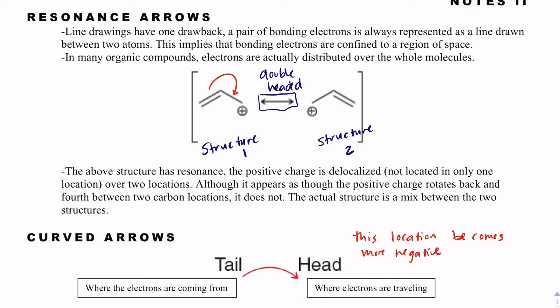Whereas the tail — electrons are leaving that area — so that location becomes more positive.